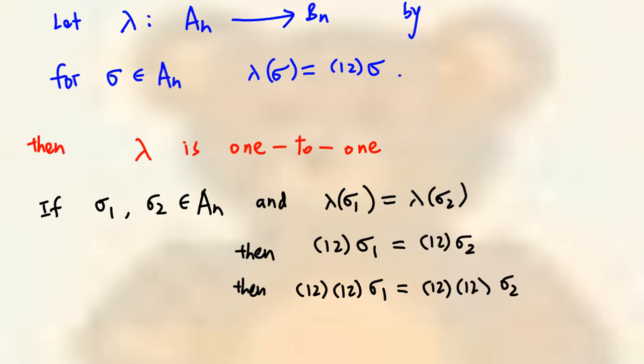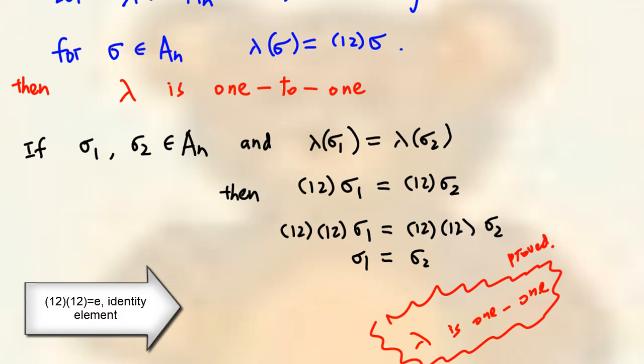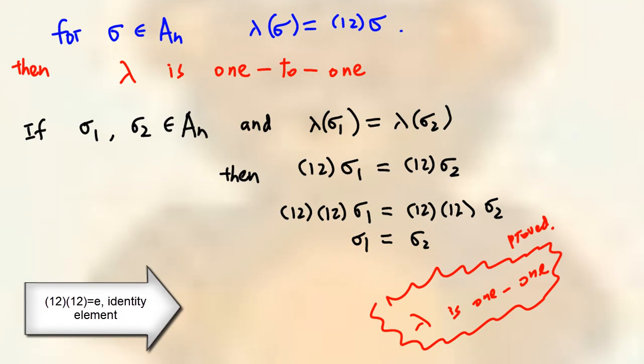If we multiply both sides on the left by (1 2) again, then (1 2)(1 2) sigma 1 is equal to (1 2)(1 2) sigma 2. But since (1 2)(1 2) is identity e, therefore, we will have sigma 1 equal to sigma 2. And this proves that lambda is 1 to 1.